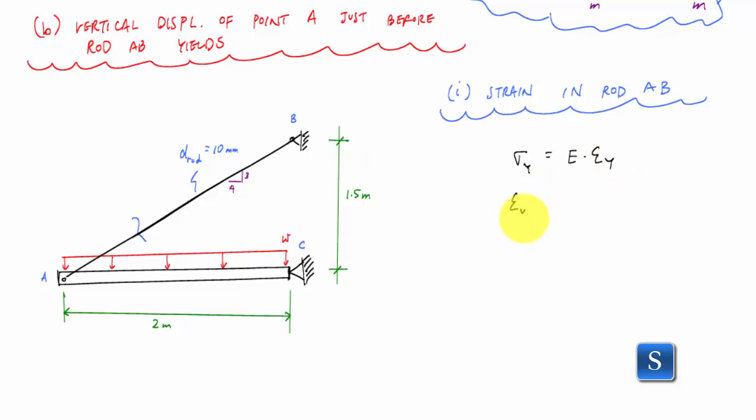So the yield strain of this material is just going to be 250 megapascals over 200 gigapascals.